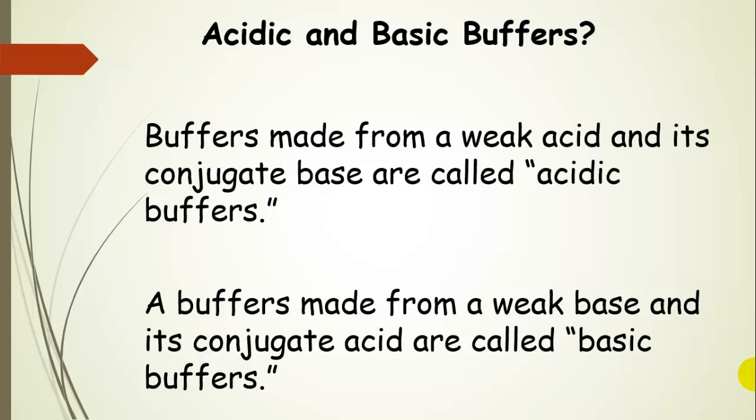Now buffers that are made from a weak acid and its conjugate base, those are called acidic buffers. And so the pH is going to be between 0 and a little less than 7. A buffer made from a weak base and its conjugate acid is going to be a basic buffer with a pH higher than 7.